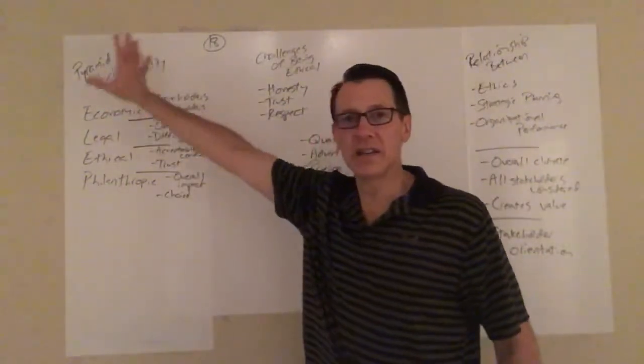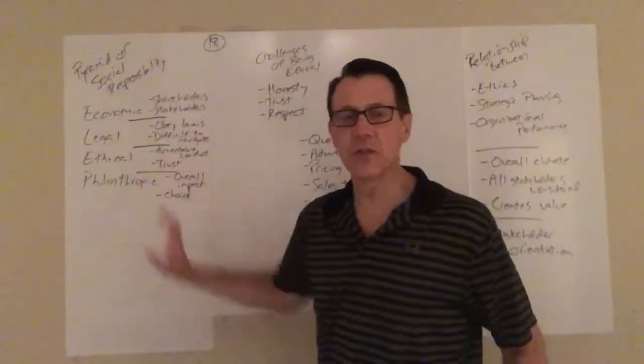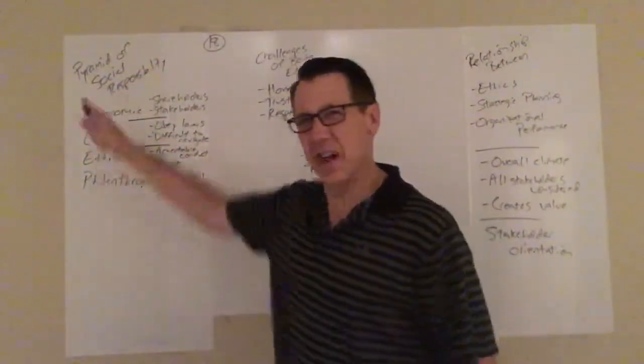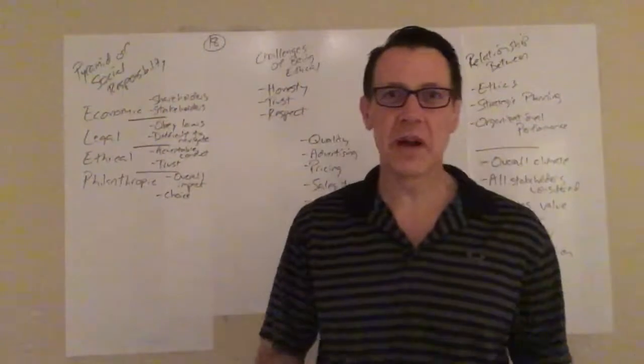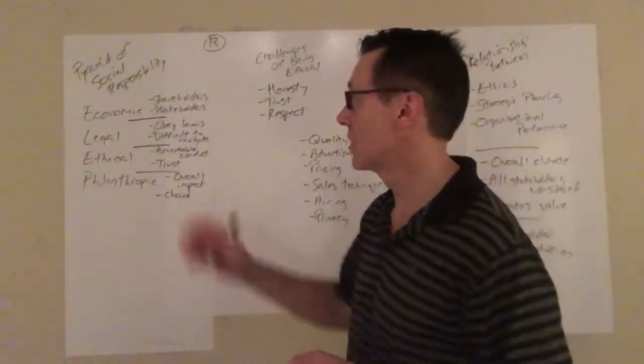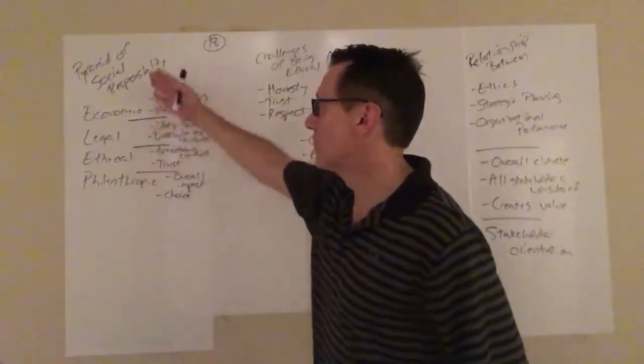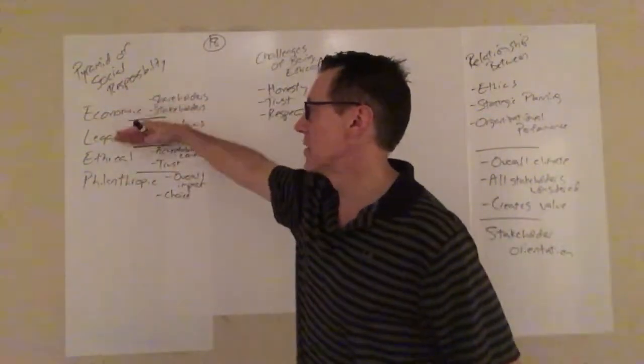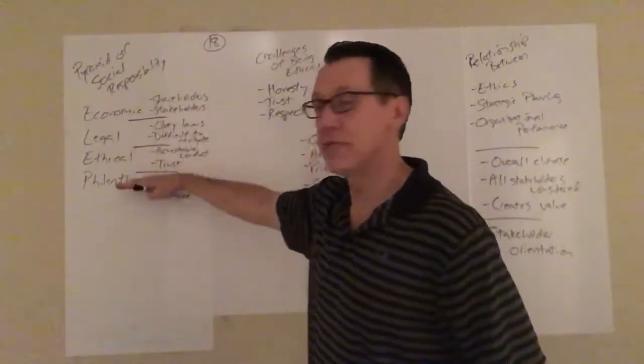So on this side, we call this the pyramid of social responsibility. It's really kind of more of a square, but I want to make sure it matches with anything else that you're reading, any supplemental material. So it's called the pyramid. You have four different areas: economic, legal, ethical, and philanthropic.